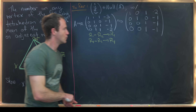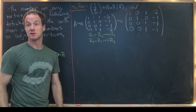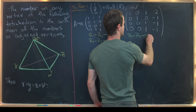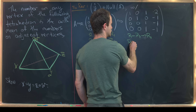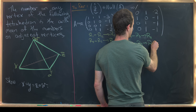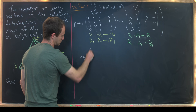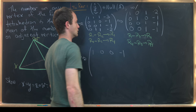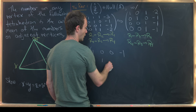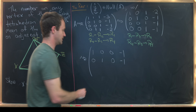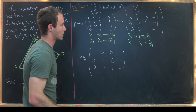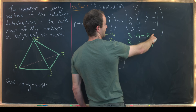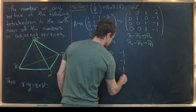Next we use row 3 to eliminate entries in row 1 and row 4. Row 1 − row 3 becomes the new row 1, and row 4 − row 3 becomes the new row 4. That leaves: [1, 0, 0, −1], [0, 1, 0, −1], [0, 0, 1, −1], [0, 0, 0, 0]. The all-zero row tells us that we do indeed have a non-trivial null space.